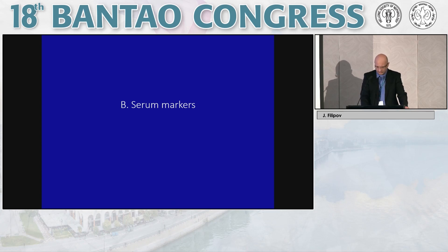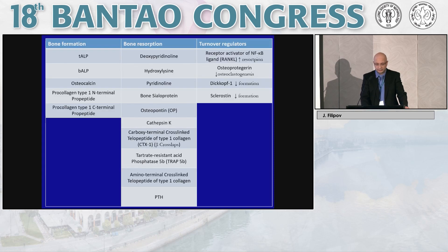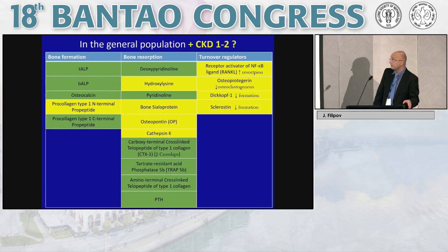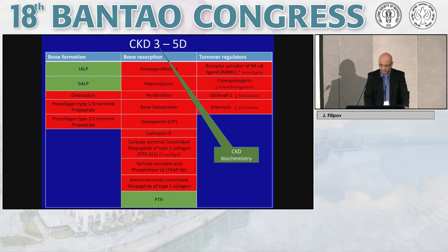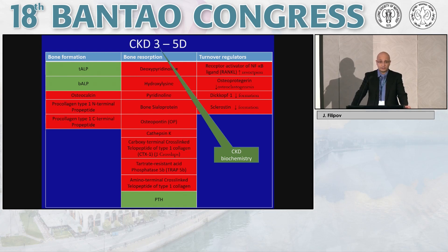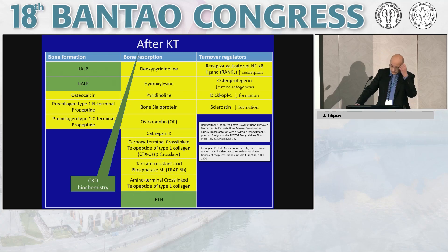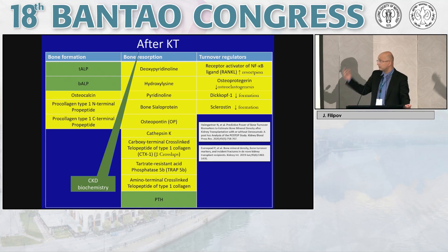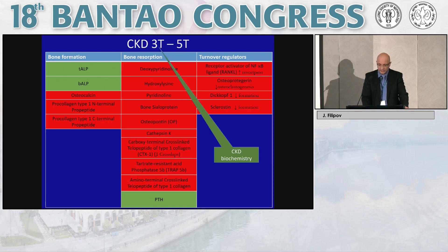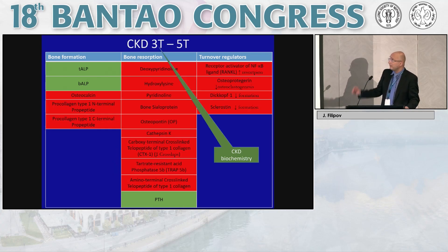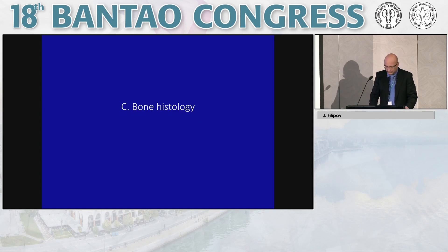Regarding serum bone turnover markers, only about half of the markers used in the general population are validated in CKD stages 3 to 5D. In native kidneys, most biomarkers are not validated or recommended for use except for alkaline phosphatase and PTH. After kidney transplantation, information from bone turnover markers remains limited, and in GFRs below 60 these markers cannot be reliably used.